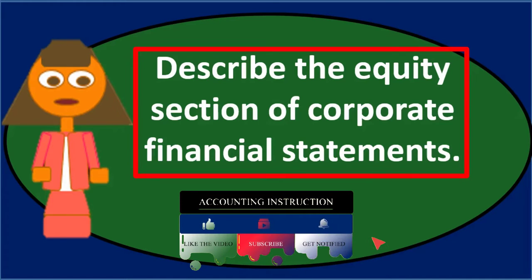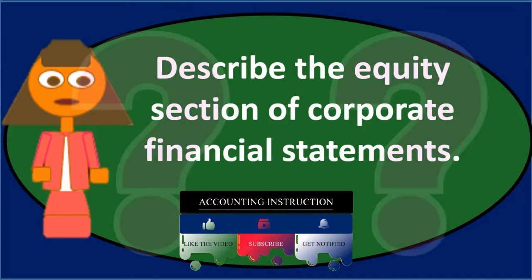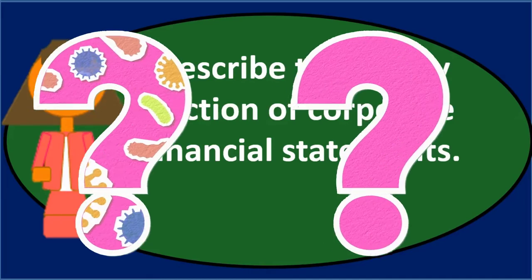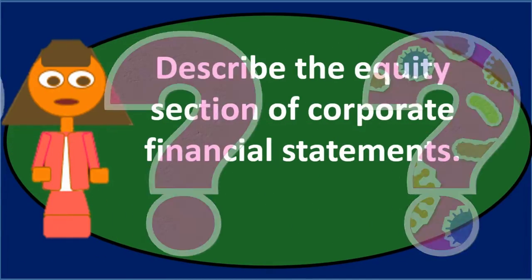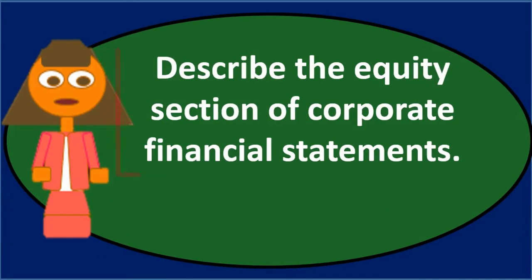When we look at different entities, we want to know what differs so we know which entity would be best under certain circumstances. Here we're focusing on an area of the financial statements that will differ — the equity section — because the format of ownership is what's different, and that is represented in the equity section.